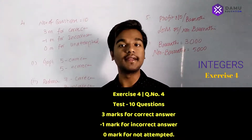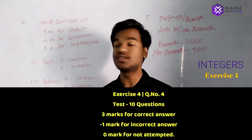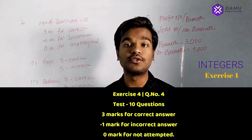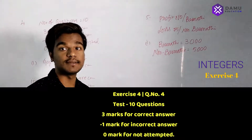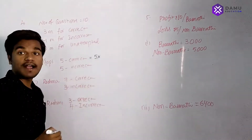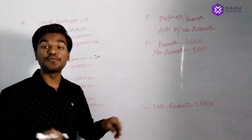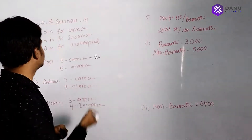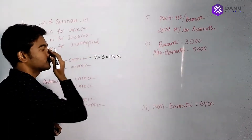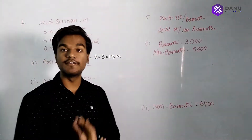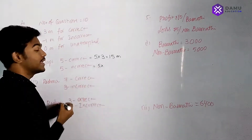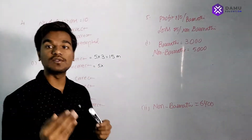The first question: Goby attempted all the questions — he got five correct answers and five incorrect answers. What is his score? First we calculate the marks for correct answers: 5 into 3 marks for each correct answer, that is 15 marks. Next, for incorrect answers: 5 into minus 1 mark.